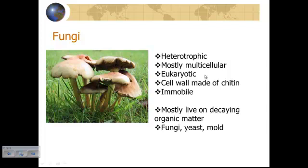Fungi are eukaryotic — they must have a nucleus in their cells. They do have a cell wall, but it's made of chitin. Fungi are immobile — another word for that is sessile, spelled S-E-S-S-I-L-E — they cannot move. They live mostly on decaying organic matter. When you're walking through a forest and you see a tree that's fallen down, you often see fungus growing on it, chemically digesting and absorbing the organic material from that tree — essentially eating it, so to speak.